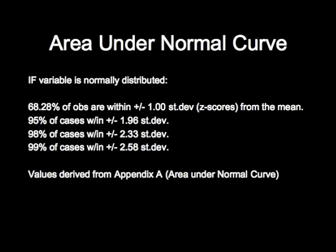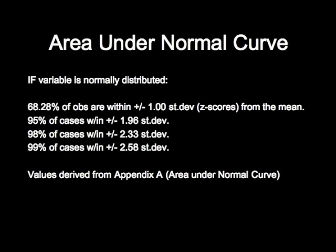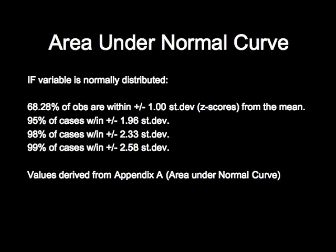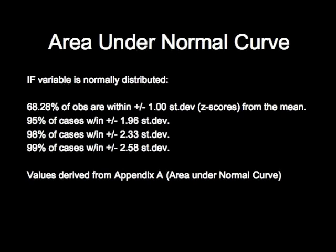Now if you know a variable is normally distributed, and if you take a random sample, then what you also know is that 68% of the time, you're going to be within the vicinity of that unknown population value plus or minus one standard deviation.